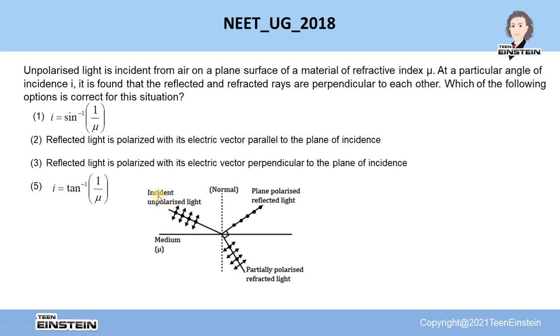The incident polarized light is having a particular angle of incidence at this interface. Suppose that is I which is given here in this problem. So at that particular angle of incidence, reflected ray and refracted ray, they become perpendicular to each other.